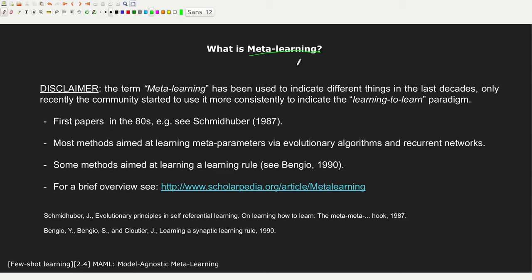First I'd like to briefly explain what meta-learning is. The term meta-learning has been used in the last decades by different communities with different meanings, so if you read an older article, they may use it with a different connotation. Only recently, probably three or four years ago, this term has been consistently used to indicate the learning-to-learn paradigm. One of the first papers is that of Schmidhuber in the 80s, who wrote about meta-learning using evolutionary algorithms and recurrent networks.